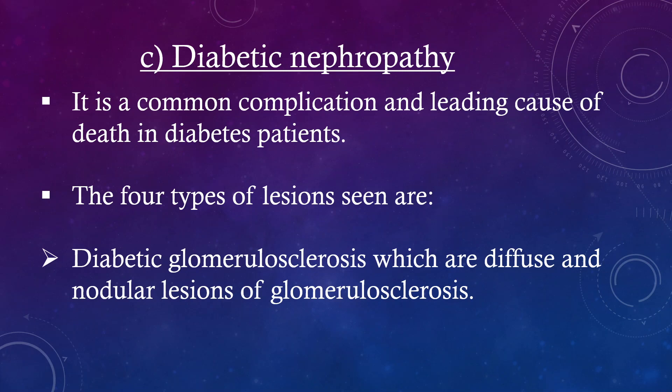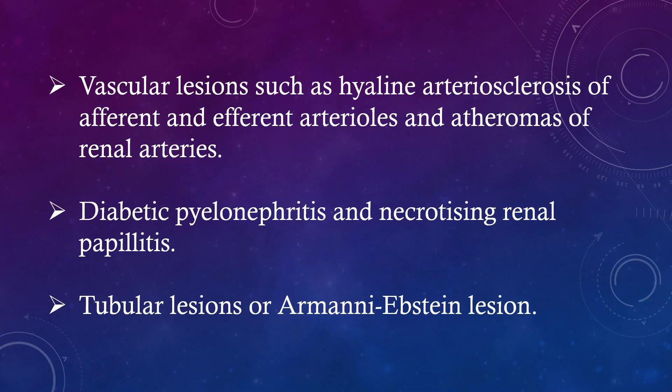Diabetic nephropathy is a common complication and a leading cause of death in diabetic patients. The four types of lesions seen are: diabetic glomerulosclerosis, which includes diffuse and nodular lesions of glomerulosclerosis; vascular lesions such as hyaline arteriosclerosis of afferent and efferent arterioles and atheromas of renal arteries.